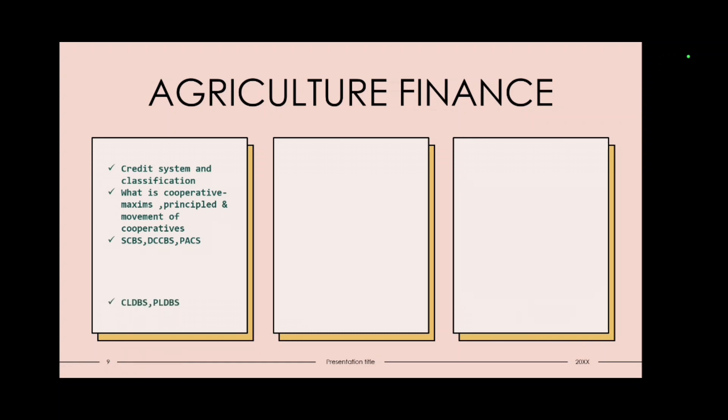Then you will get to know about SCB, DCCBs, PACs, CLDBs, PLDBs. I'll you will get to know what are these in the later videos. Then single window system, LAMS, FSS, social control nationalization of bank. You must have heard about nationalization of bank. So this is also there in agriculture finance. Then multi-agency approach.